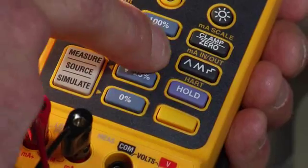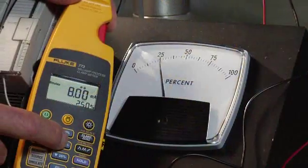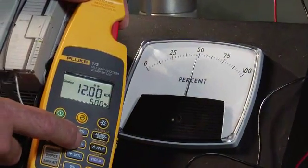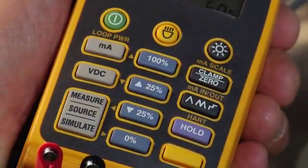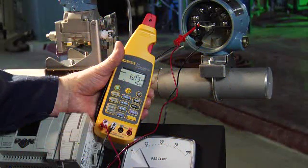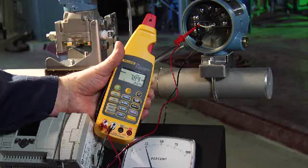In simulate mode, you can exercise and check the local indicator at 25% steps. You can also utilize the ramp feature and test it automatically by ramping the milliamp signal and watching it change.